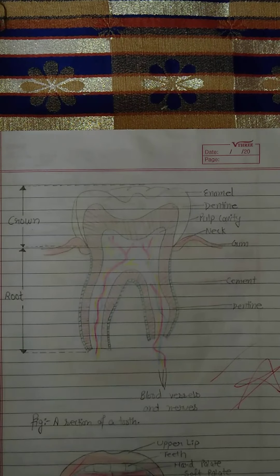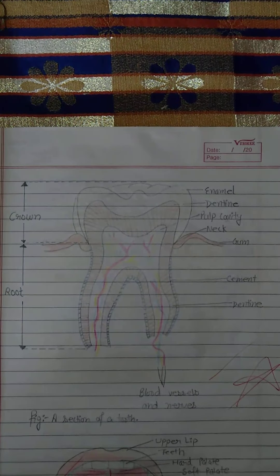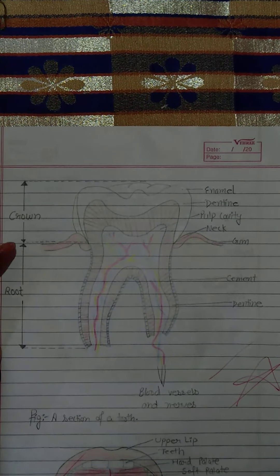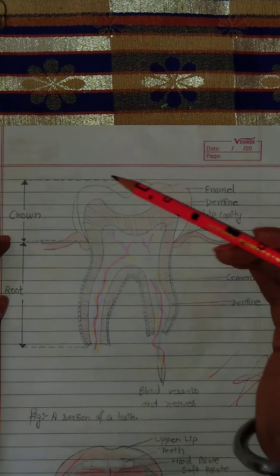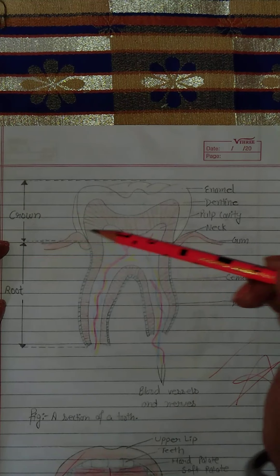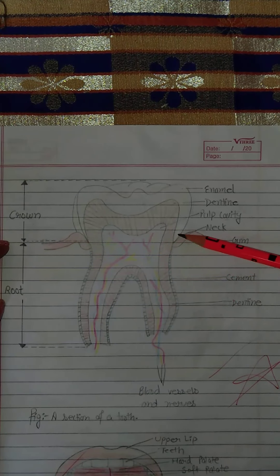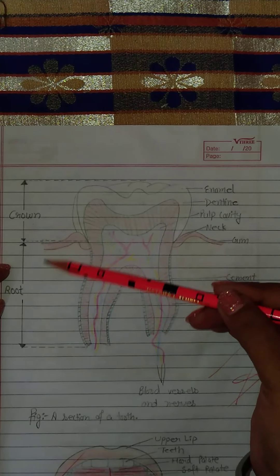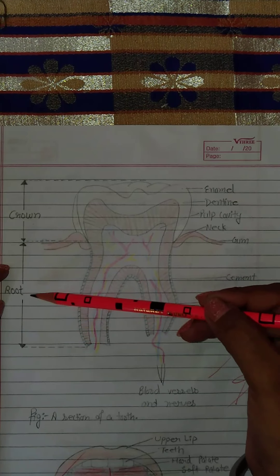The tooth is divided into three sections. This part is known as crown, this part is known as neck, and this part of the tooth is known as root.